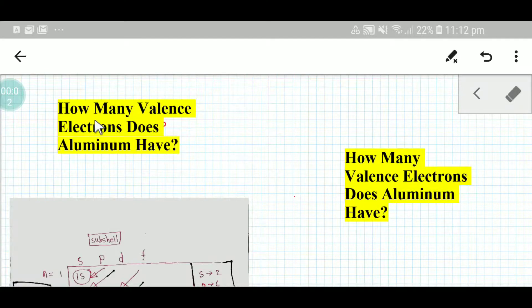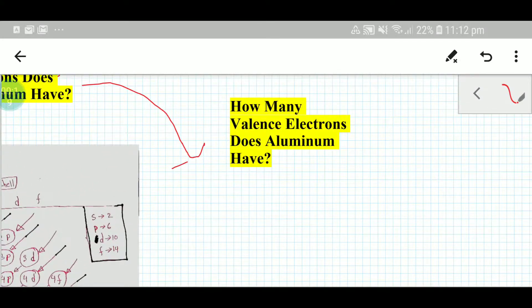Welcome to Chemistry Tutorial 360. Today we are going to find out the valence electrons of aluminum. To find out the valence electrons of aluminum, we have to look at the periodic table.